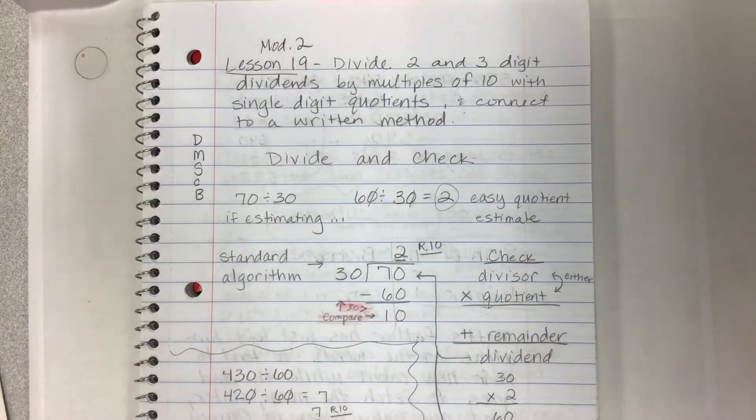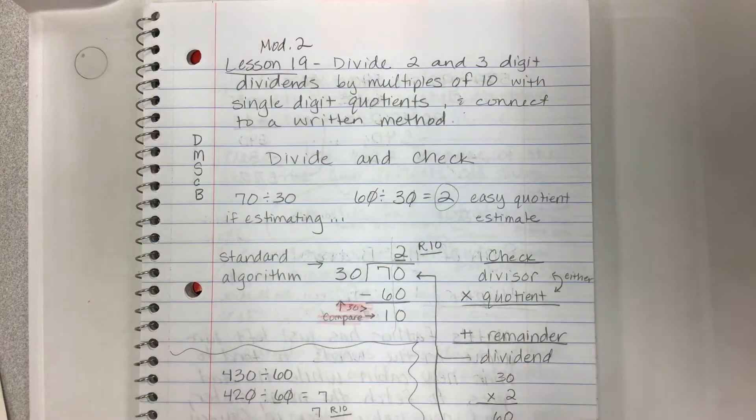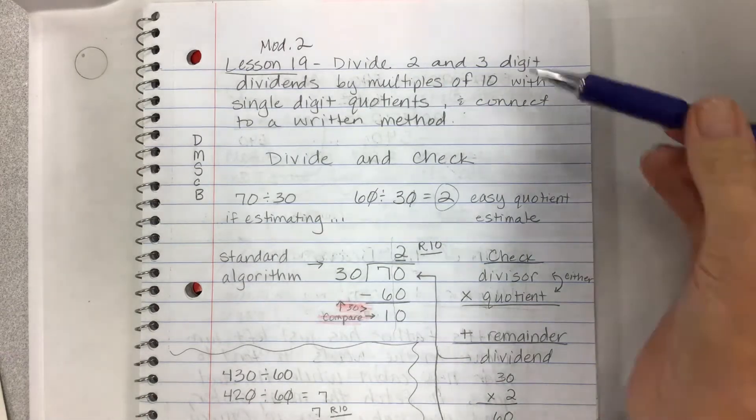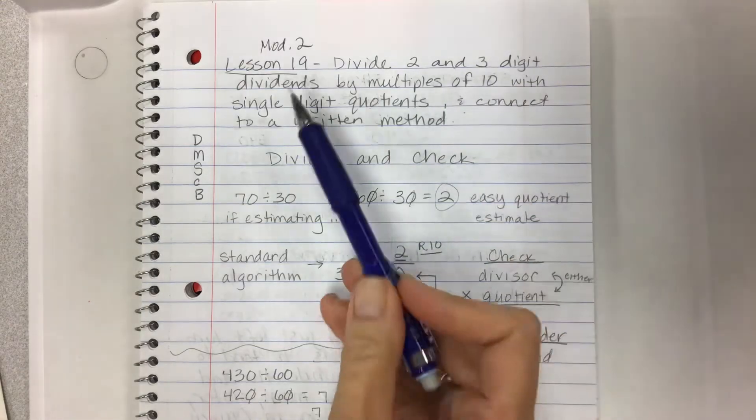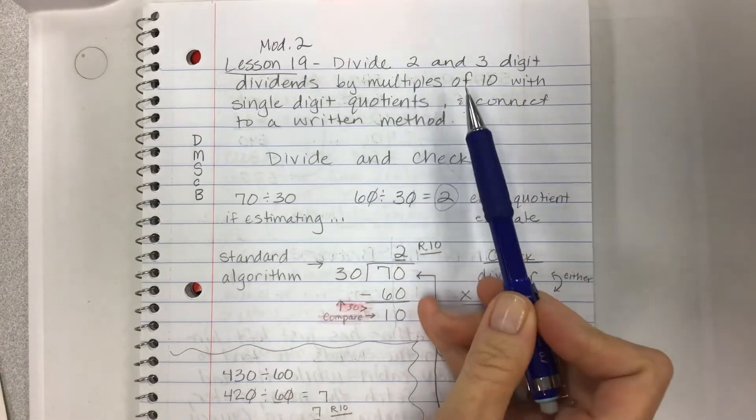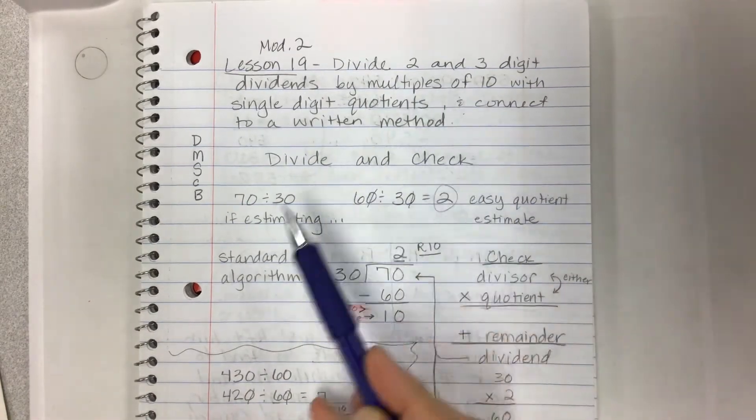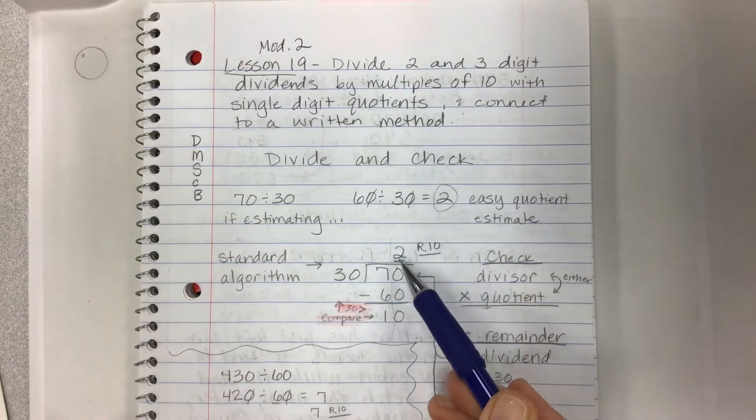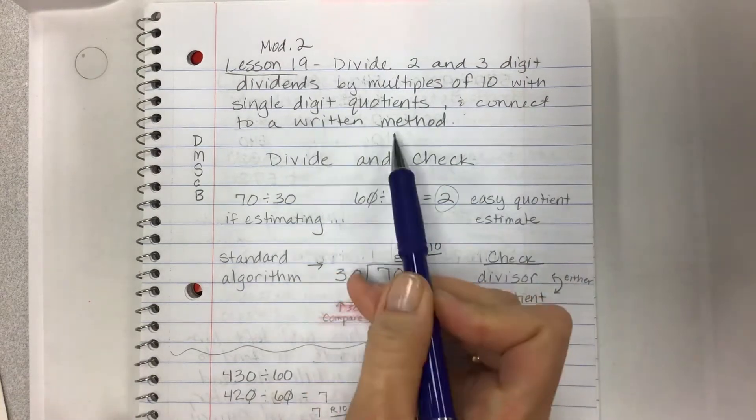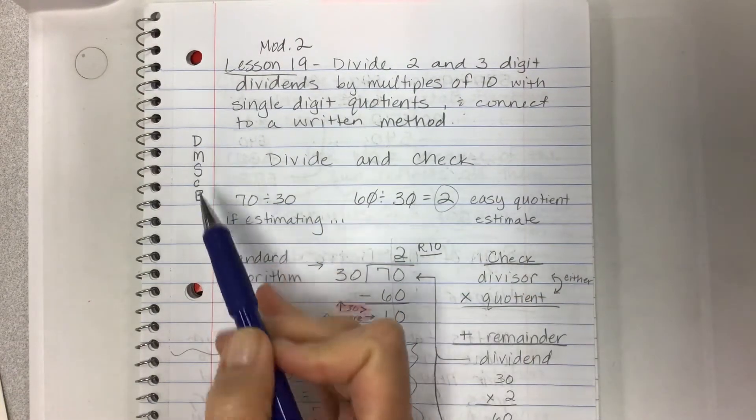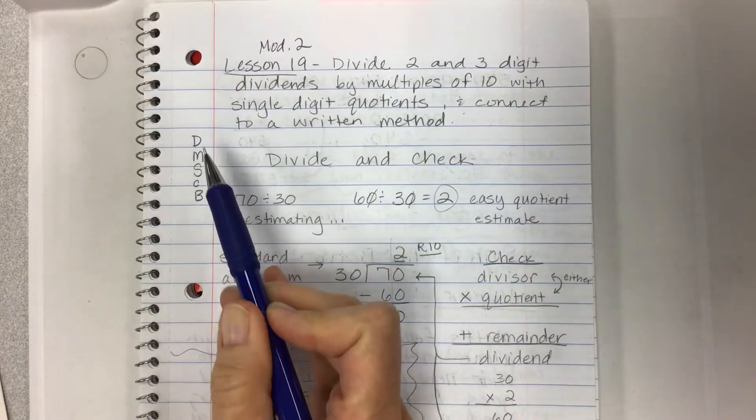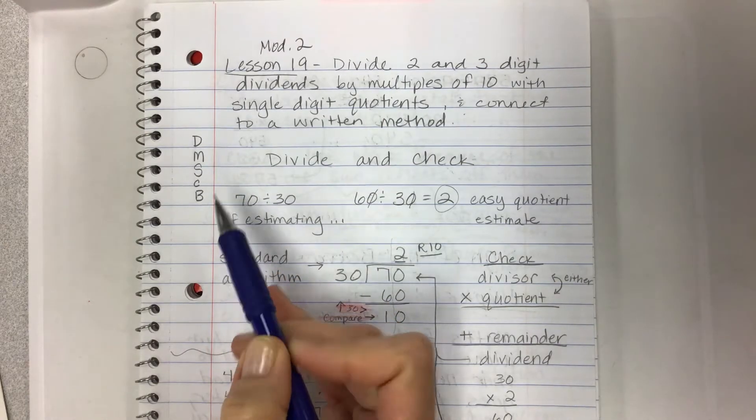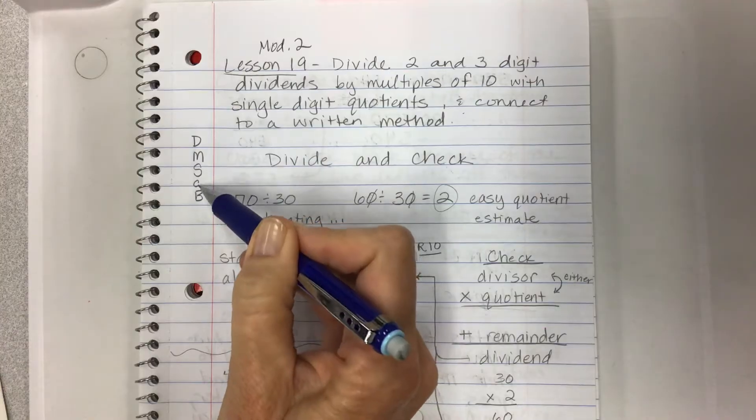This one is about dividing. It's very exciting, we're actually getting into the standard algorithm, and we're going to take a look at simple division with two and three digit dividends, that means on the inside of the bracket, by multiples of 10, with single digit quotients, that means a single digit on the top. Then we're going to connect to this written method using the division family members and using the steps divide, multiply, subtract, compare.